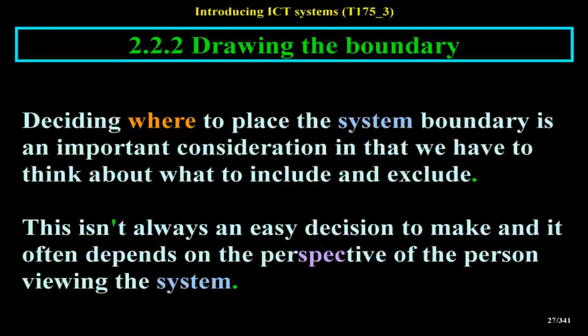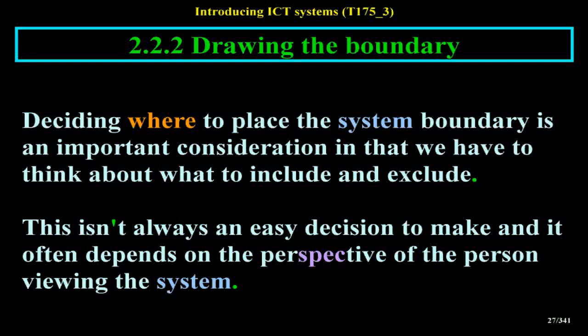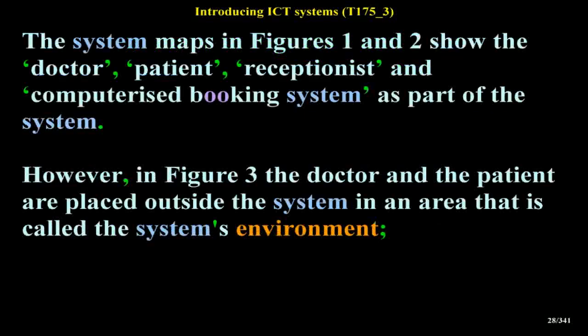Drawing the boundary: deciding where to place the system boundary is an important consideration in that we have to think about what to include and exclude. This isn't always an easy decision to make and it often depends on the perspective of the person viewing the system. The system maps in Figures 1 and 2 show the doctor, patient, receptionist and computerized booking system as part of the system.